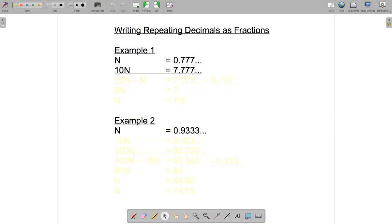Okay and now if I subtract n from 10n I'm going to be able to get rid of the repeating decimal part. So let's see how that works.